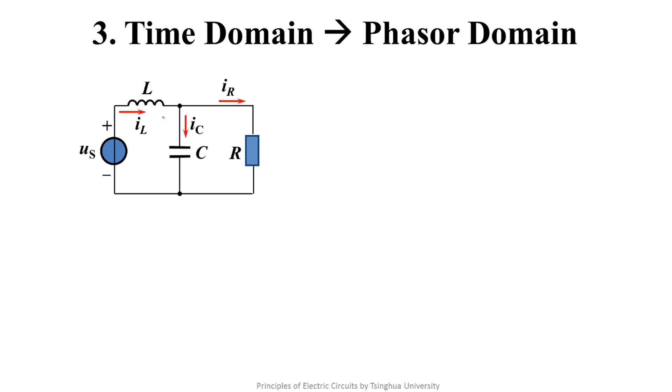Now we list equations. By applying KCL to this node, we know IL equals IC plus IR.